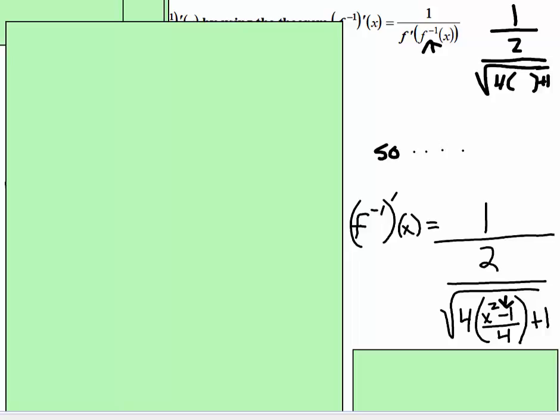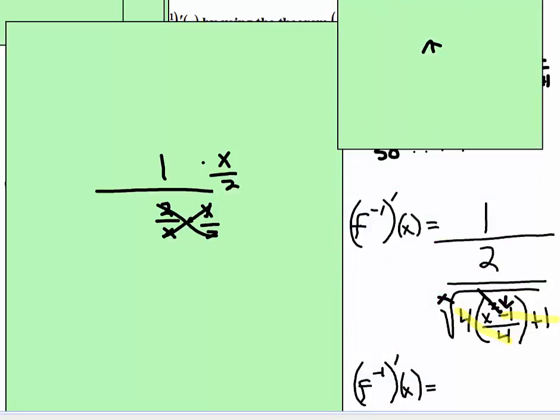Let's see what can cancel. Well, 4 times the dividing 4, those cancel, and then look at it. Now what we're left with is x squared. Subtract 1 plus 1, so the 1's can cancel. And then what we're left with is the square root of x squared. That cancels. So now what you have is 1 over 2 over x. Well, we're going to multiply top and bottom by x over 2. And so what you end up with is the derivative of the inverse is x divided by 2. That's it.